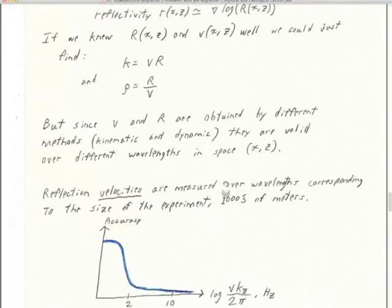Even with that, there's still a complex relationship between K and rho — it doesn't separate them at all. You might say: if I get a reflectivity section and separately a velocity section of X and Z, I can just find them with these ratios. To get K I take V times the impedance; to get rho I take the impedance divided by the velocity. But the trouble is V comes from the kinematic travel-time measurements and the impedances come from the dynamic part of the data set. These are two fundamentally different processes that operate over different wavelengths in space.